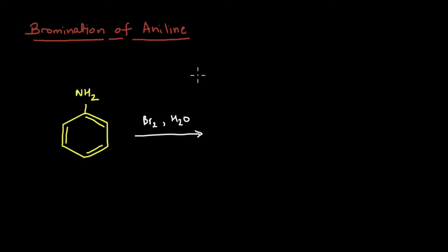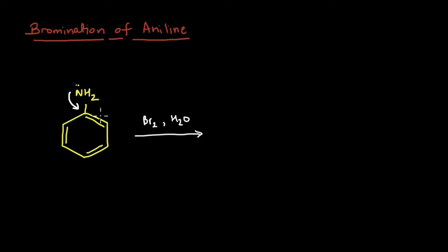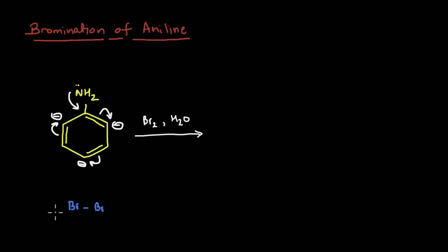Bromination reactions are a type of electrophilic substitution reactions and it's one of the most commonly performed experiments in the lab. Let's see how the bromination of aniline happens. We already know something about aniline - it has a lone pair that it is going to share with the ring, and because of resonance, when we shift this pi bond, the electron density increases at the ortho and the para positions. In other words, this NH2 group is ortho-para directing.